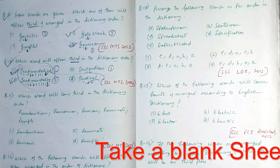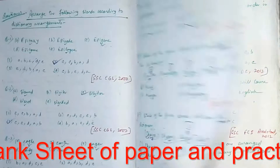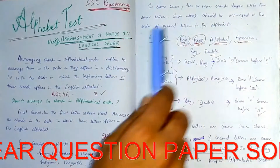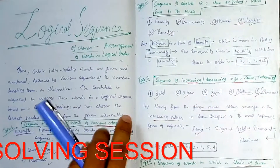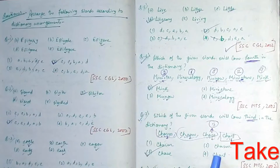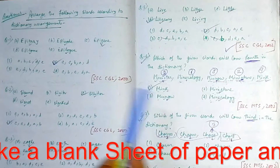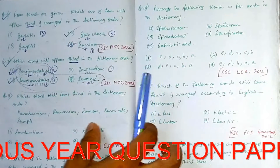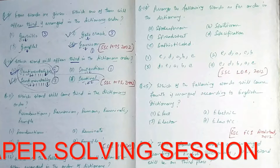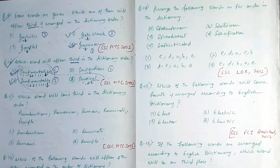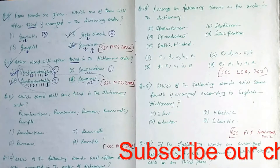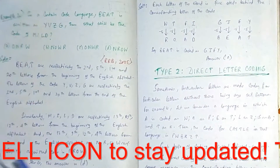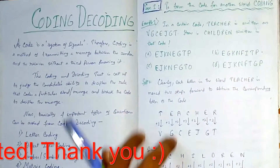Hello everyone, welcome to another computer exam session. Today we will be continuing this live previous year question solving session from the logical sequence and alphabetical test. We have discussed all the theories and easy tricks about how to solve logical sequence and alphabetical problems, and we've covered previous year question papers from SSC CGL, SSC MTS, and SSC CHSL. We'll be continuing from question number 11 till question number 16 in today's video, then we'll discuss the coding and decoding section in our next video.